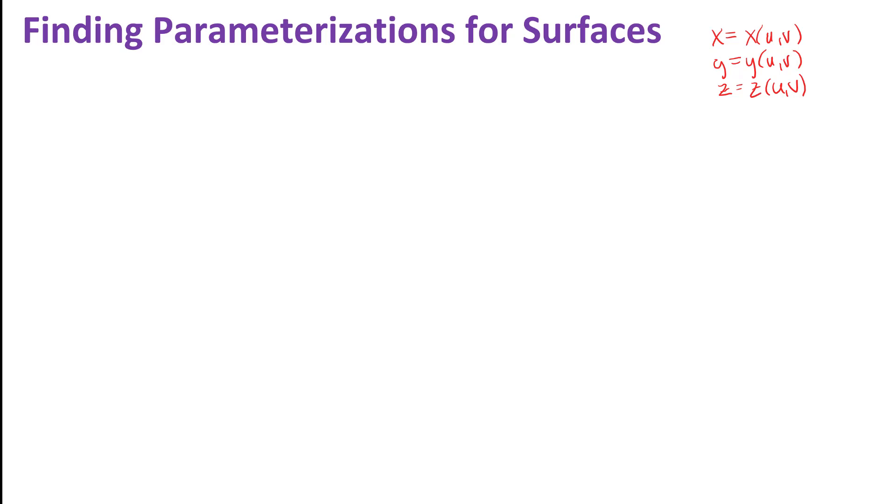The important thing to understand here is first of all you don't have to use u and v. There are times where you might prefer to use different letters, but most of the formulas that we have later in the chapter refer to u and v, so it's sometimes convenient to do those. The other thing to understand about this is that parameterizations of surfaces, just like parameterizations of curves, are not unique. They perhaps induce a different motion along the surface, but the actual points on the surface could be the same even with different parameterizations.